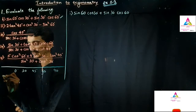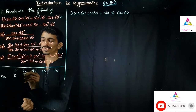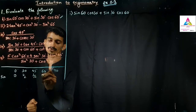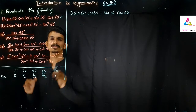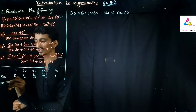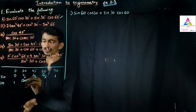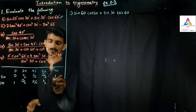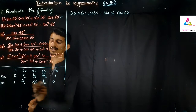For the sine values: sine 0° = 0, sine 30° = 1/2, sine 45° = 1/√2, sine 60° = √3/2, sine 90° = 1. For cosine, the values are the reverse: cos 0° = 1, cos 30° = √3/2, cos 45° = 1/√2, cos 60° = 1/2, cos 90° = 0.